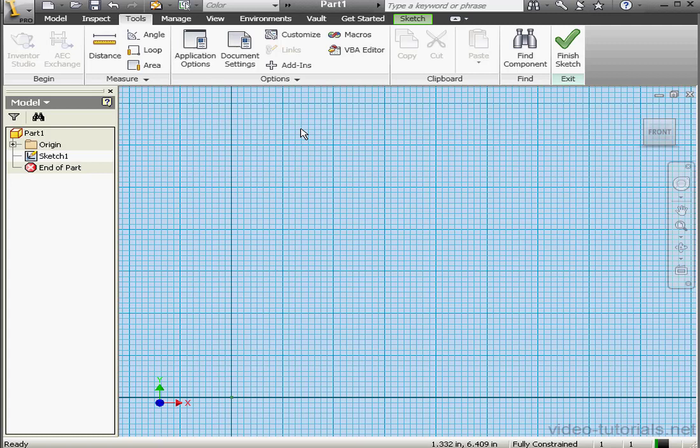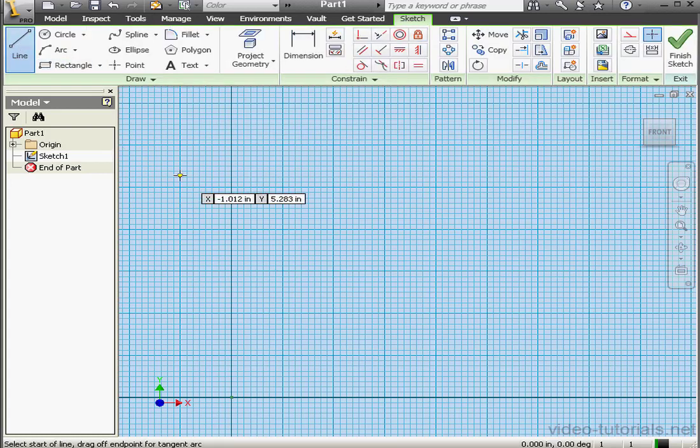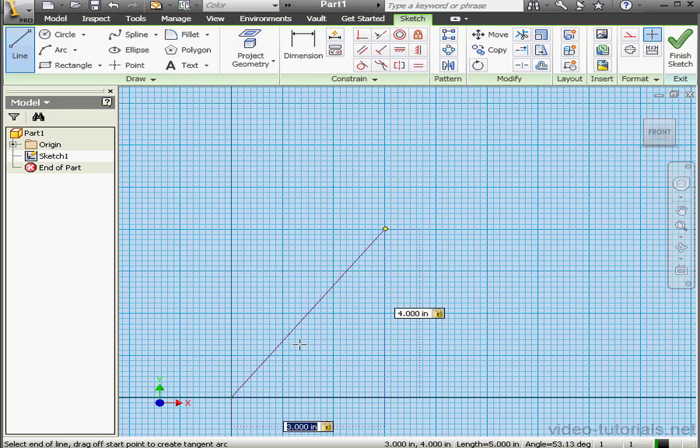Let's begin this all with a simple line. I'm going to start it at the origin point. The second point will be 3 units in the x direction, tab to register, and then 4 units in the y direction, tab and enter. Right-click and done.